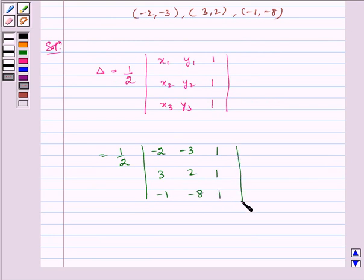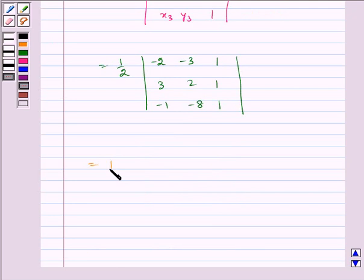Now solving this we get half into minus 2 into 2 plus 8, plus 3 into 3 plus 1, plus 1 into minus 24 plus 2.